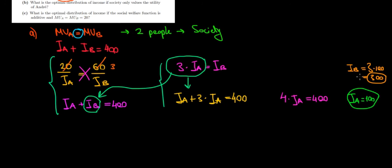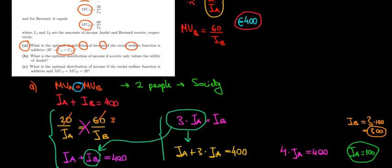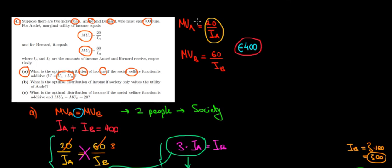This makes intuitive sense: the income of Bernard is three times that of Andre because Bernard's marginal utility function has a higher intercept — 60 divided by his income — meaning Bernard values the last euro much more than Andre. That's why, as a society, we decide to give him more money. In the next video, we'll go through parts B and C.